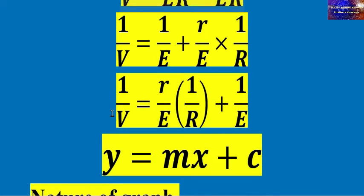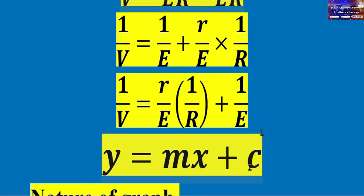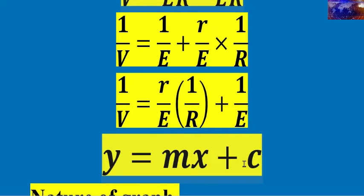That is the general equation which relates to the nature of the graph. It takes the form y equals mx plus c, where 1 over V is the y-axis, r over EMF is the slope (m), 1 over R is the x-axis, and 1 over EMF is the y-intercept (c).